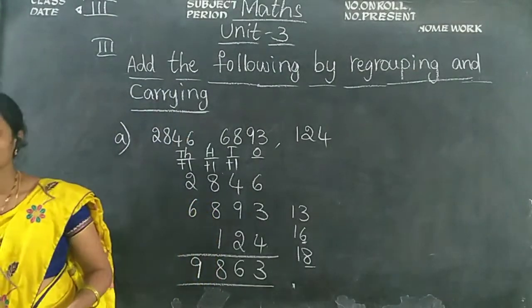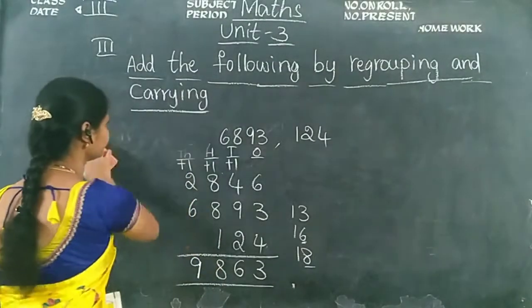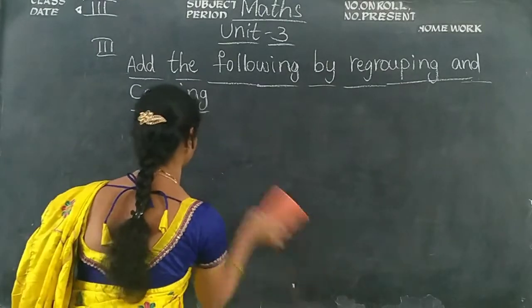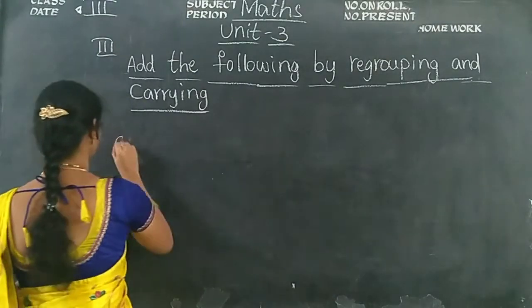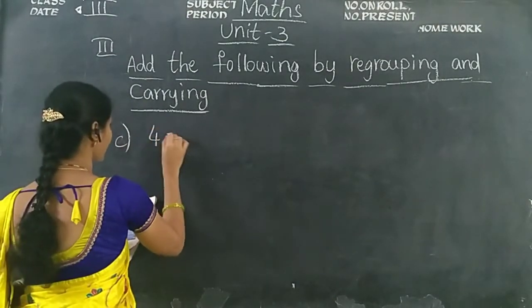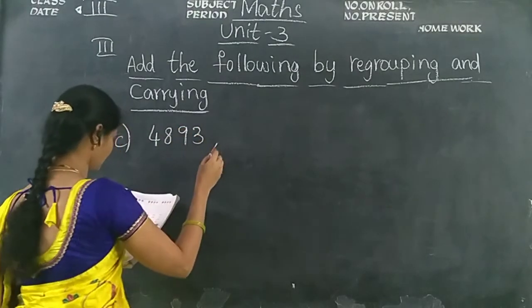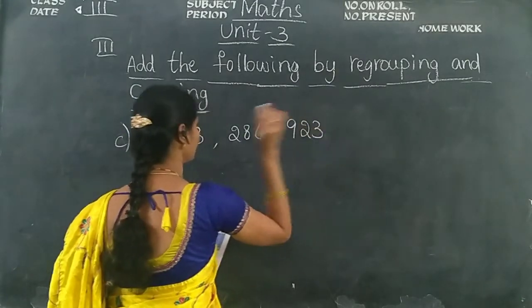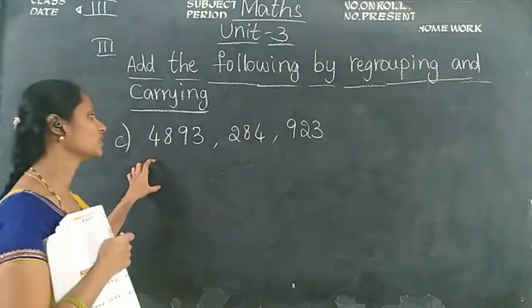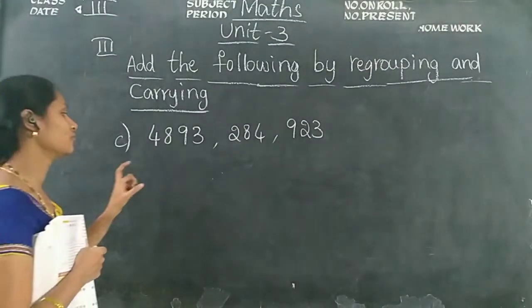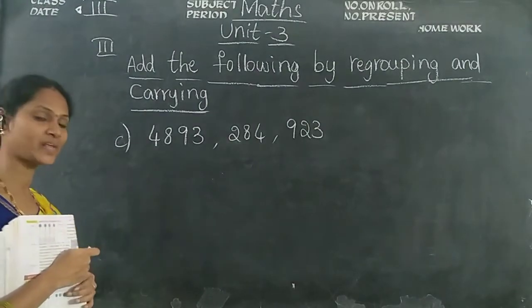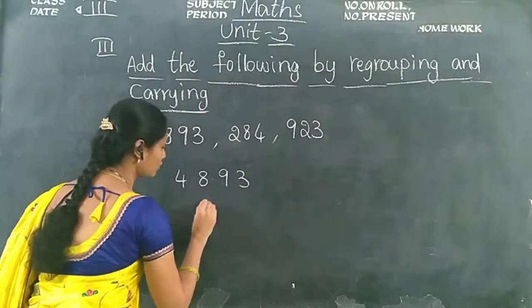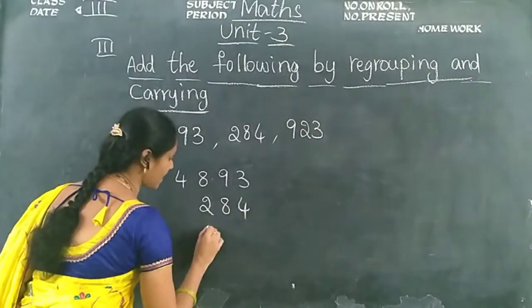Now see the third sum: 4,893, 284, and 923. First we are arranging the numbers according to the place value: 4,893 plus 284 plus 923.